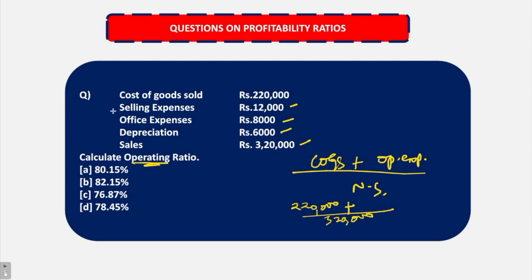Operating expenses — what are the operating expenses? Selling expenses yes, office expenses yes, depreciation also is a part of operating expenses. So the answer is 26,000 here. So 220 plus 26 upon 320, the answer comes out to be 76.87%, that is our operating ratio.